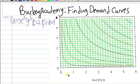In this video we're going to use utility maximization to derive a demand curve. I'm going to use this simple Cobb-Douglas utility function here: utility equals x to the 0.5 times y to the 0.5.